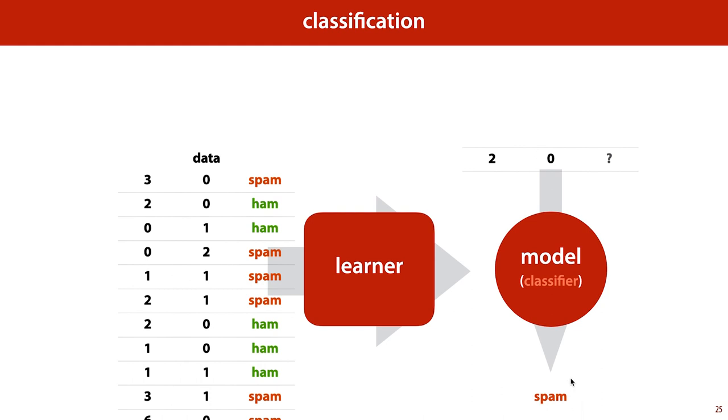Note that in this case, the model predicts spam for the instance, even though it has seen the same instance with the label ham. This is perfectly possible. The job of the model is not to memorize the data, but to learn from it. Often, the model needs to discard specific details it has seen in order to do its job well.